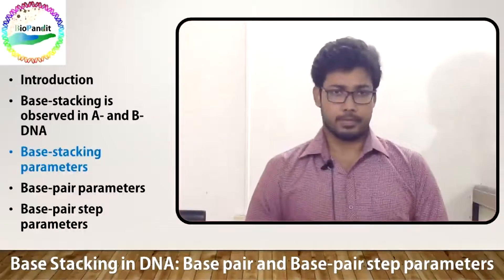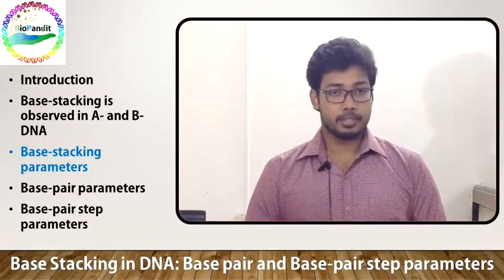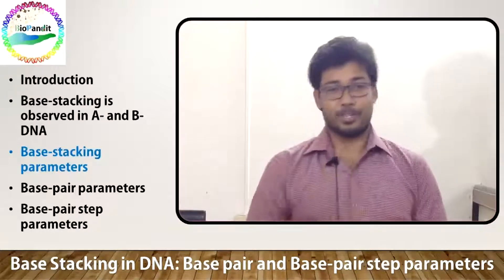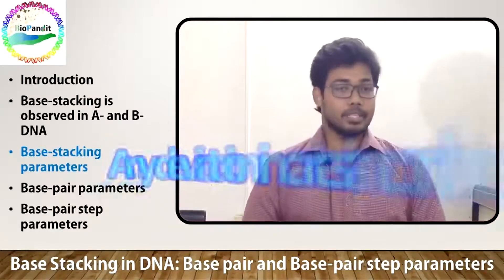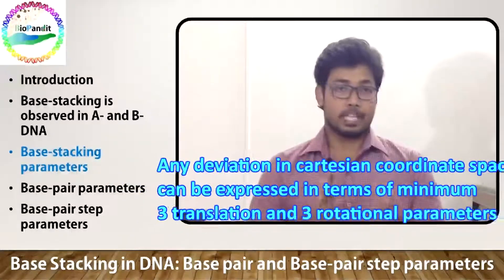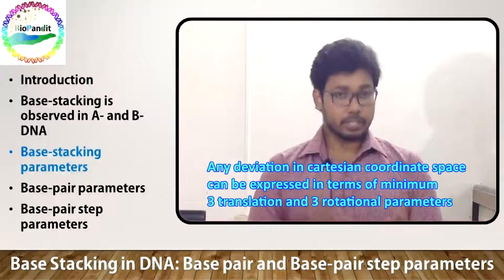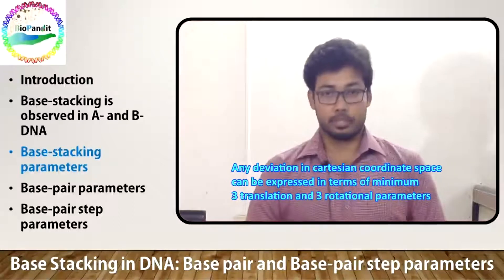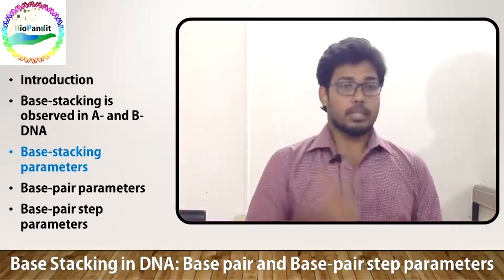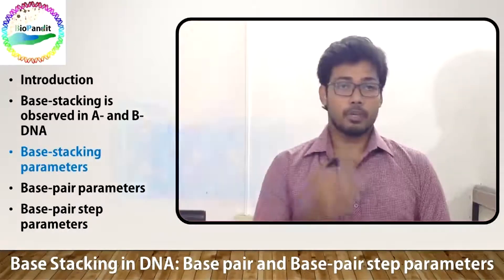Now, the deviations are there, so we have to compute them geometrically. How to do that? Here is your solution: any deviation in a Cartesian coordinate space can be expressed in terms of minimum three translations and three rotational parameters. So, let us see what those parameters are.